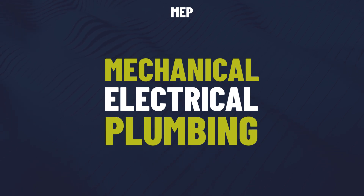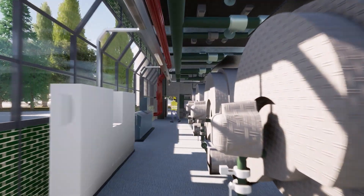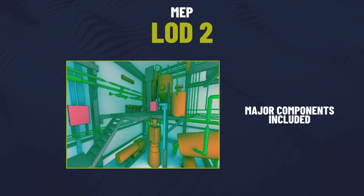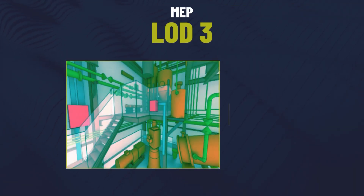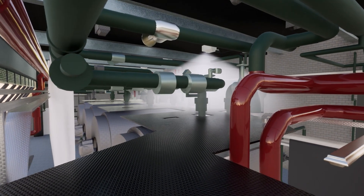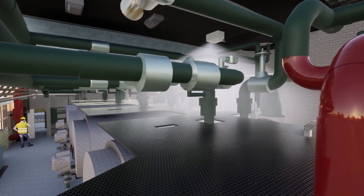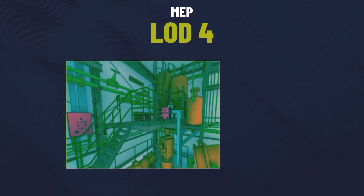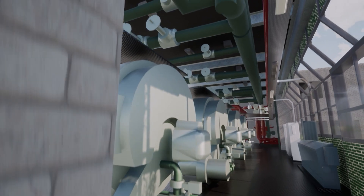MEP — mechanical, electrical and plumbing — forms the essential systems that keep a building running, and in 3D models having the right level of detail can make all the difference. At lower LODs, only major components like HVAC units and risers are included, giving an overview of spatial requirements. Higher LODs add more precise details like pipework, ducting, cable trays and fixings, essential for accurate coordination and clash detection. Areas like plant rooms and lift motor rooms require full mass modelling of large equipment, ensuring everything fits before installation.